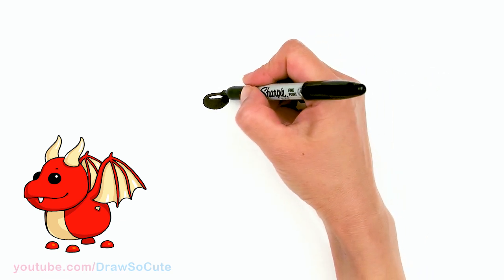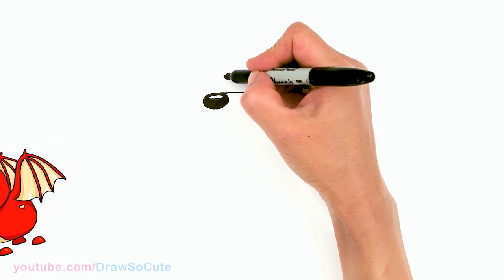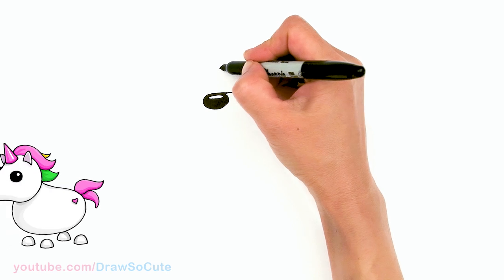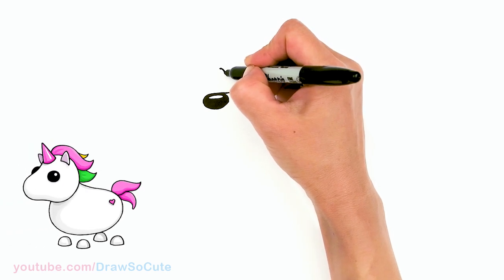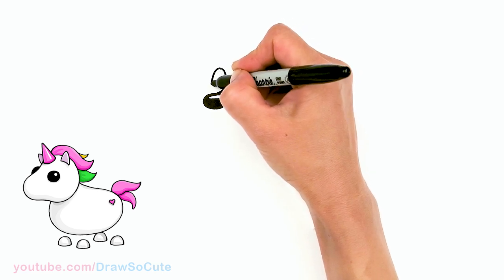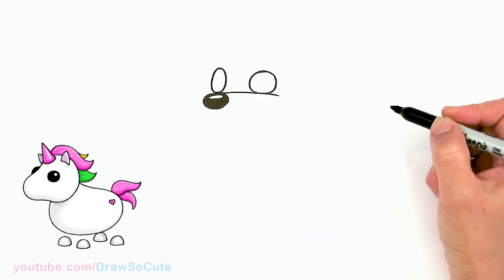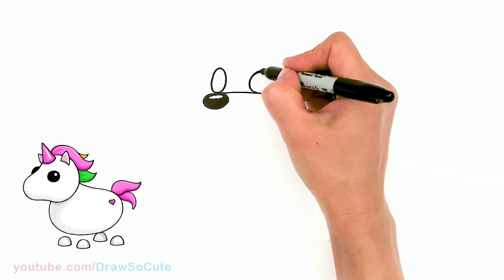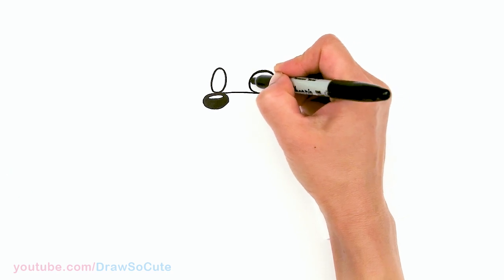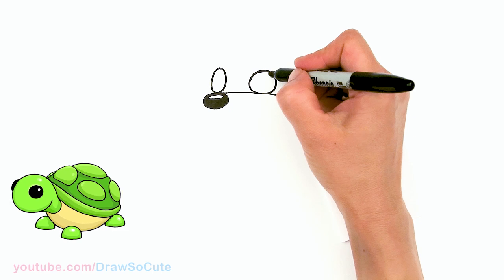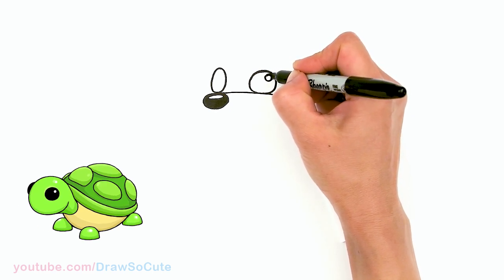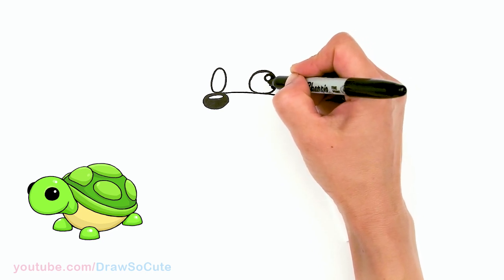I'm going to come right above this nose now and draw an oval for the other side of the eye — it's going to be about the same height. Then I'm going to come in and give it a little highlight, a little circle right on the edge here, and then shade the rest in black.